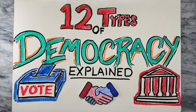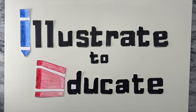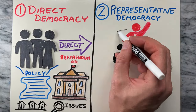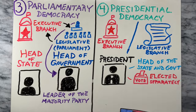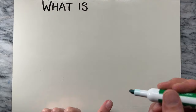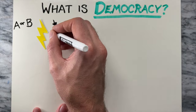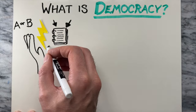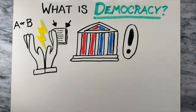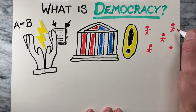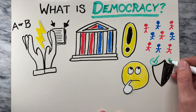Did you know there are over a dozen types of democracy? Hey, it's Dan Zimmerman. Welcome back to Illustrate to Educate. In this video, we'll take a very brief look at 12 different types of democracy. First, what is democracy? Democracy is a system of government in which the power to make decisions and influence policies is vested in the hands of the people. It's a form of government that emphasizes the participation of citizens in the decision-making process and aims to protect their rights and interests.